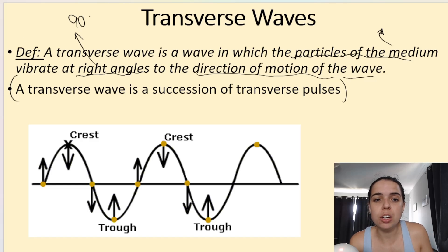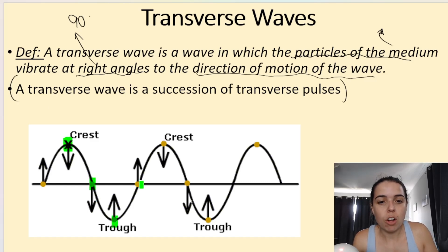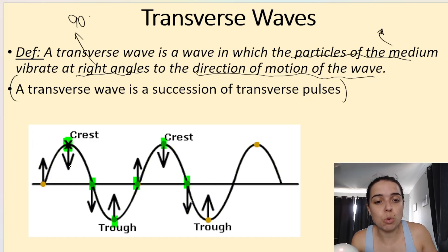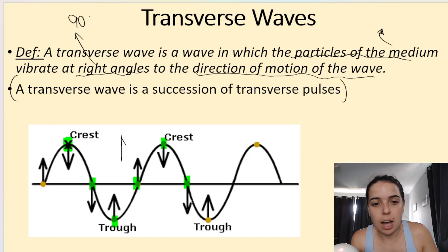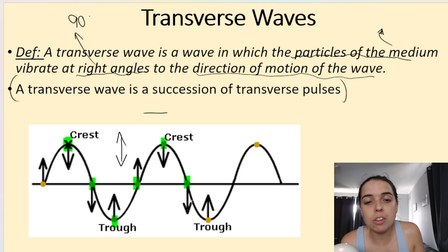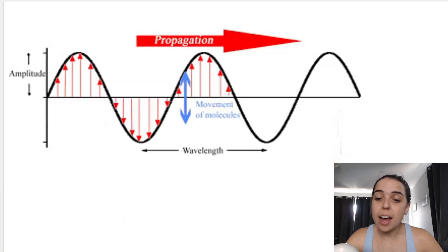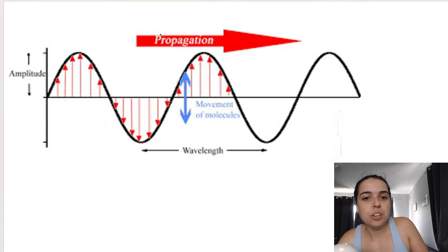So the particles of the medium vibrate at right angles to the direction of motion of the wave. The particles, represented by a little X or a dot on this diagram, will vibrate at 90 degrees to the direction of motion. For example, if the particles go up or down — as this diagram indicates — then the wave is moving left or right. Those two directions make a 90-degree angle.